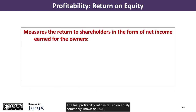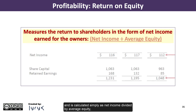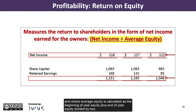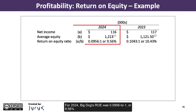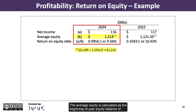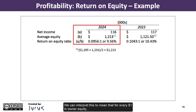The last profitability ratio is return on equity, commonly known as ROE, which measures the return to shareholders in the form of net income earned for the owners. It is calculated simply as net income divided by average equity, where average equity is calculated as beginning-of-year equity plus end-of-year equity divided by 2. For 2024, Big Dog's ROE was 0.0956 to 1, or 9.56%, calculated as $116,000 in net income divided by average equity of $1,213,000. The average equity is calculated as beginning-of-year equity of $1,195,000 plus end-of-year balance of $1,231,000 divided by 2. For every $1 in owner equity, the company generates $9.56 in net income.